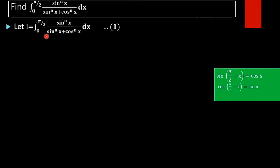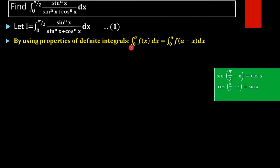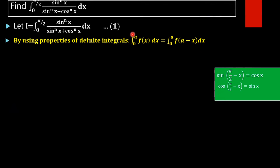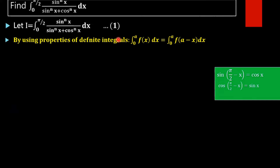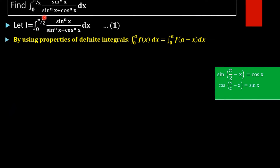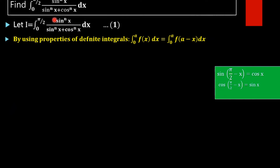The next step is to apply the property of definite integrals: integral from 0 to a of f(x) dx equals integral from 0 to a of f(a minus x) dx. That is, if we put a minus x instead of x, we get the same value for the integral. Here, comparing the two integrals, we find a equals π/2. So if we put π/2 minus x instead of x, we get the same value of I according to this property.